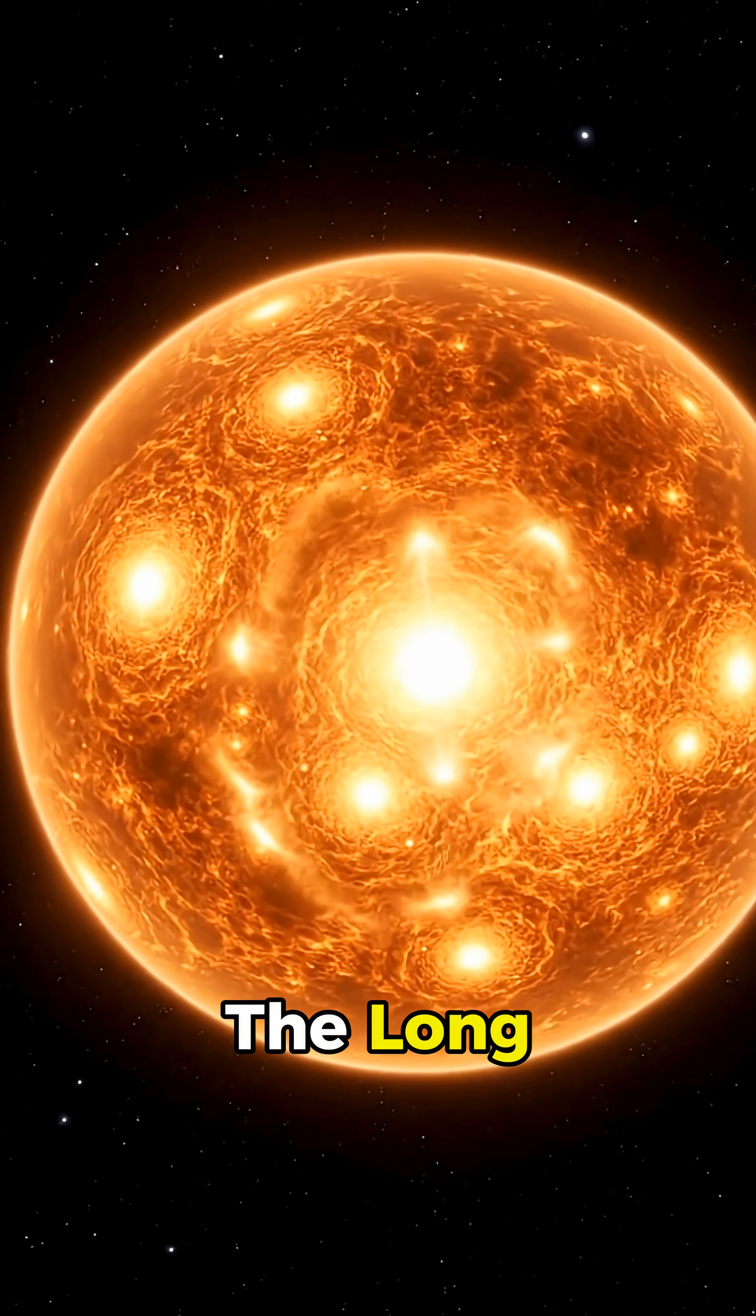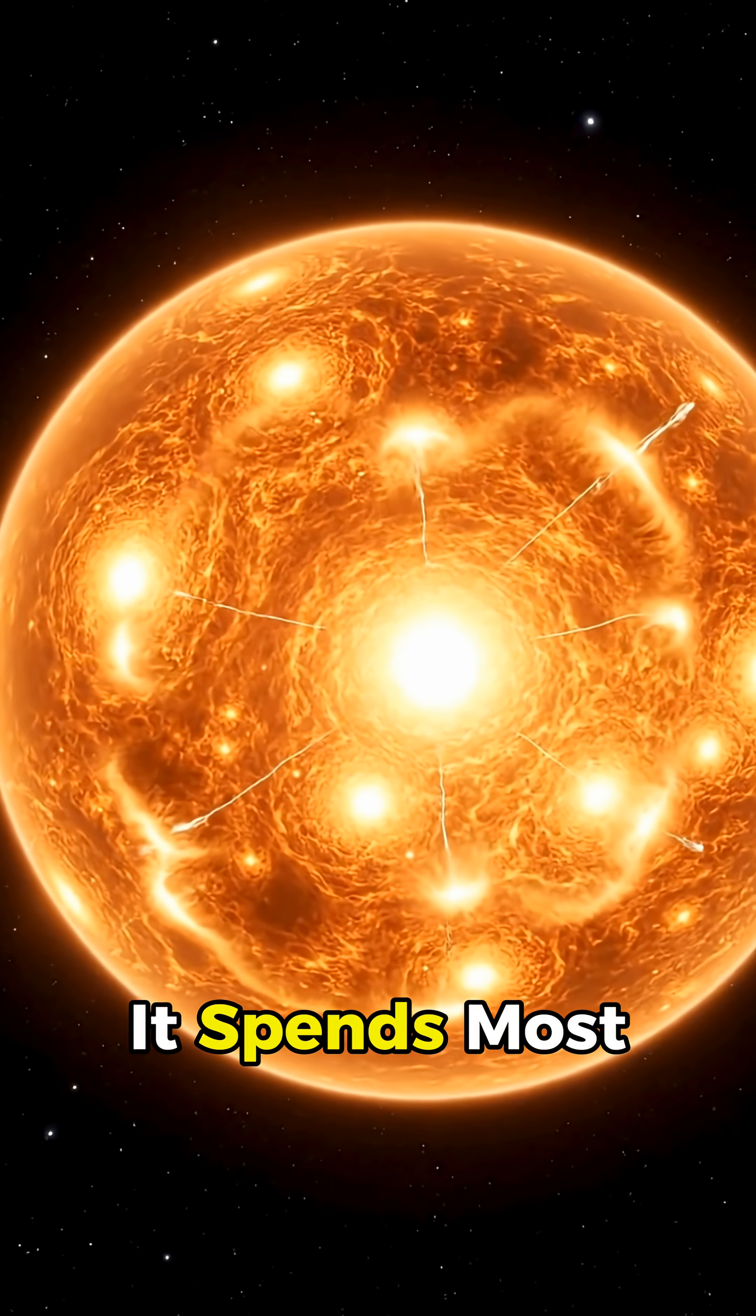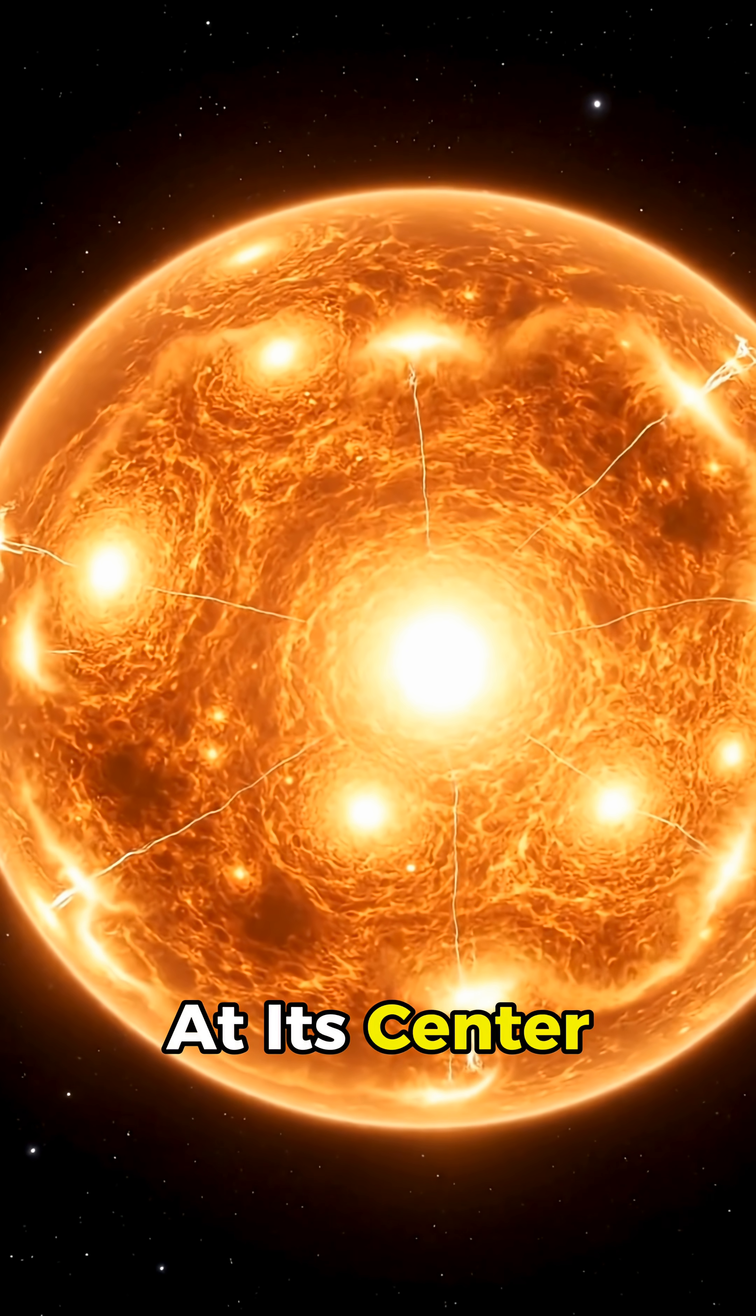Right now, our Sun is in the long, stable phase, where it spends most of its life calmly burning hydrogen at its center.